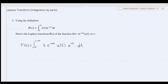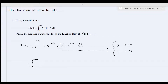We know that u of t is just 0 for t less than 0, and 1 for t greater than 0. Our integral is evaluated from 0 to infinity, so u of t will be equal to 1 within these limits. So I'll rewrite it as the integral from 0 to infinity of t times e to the negative at times e to the negative st, dt.